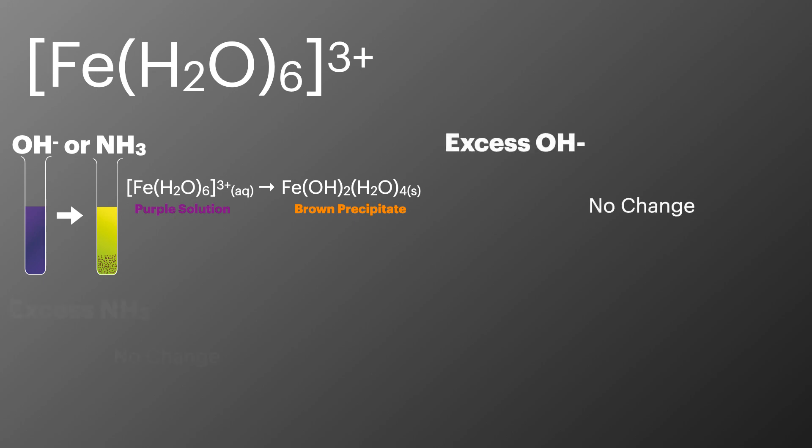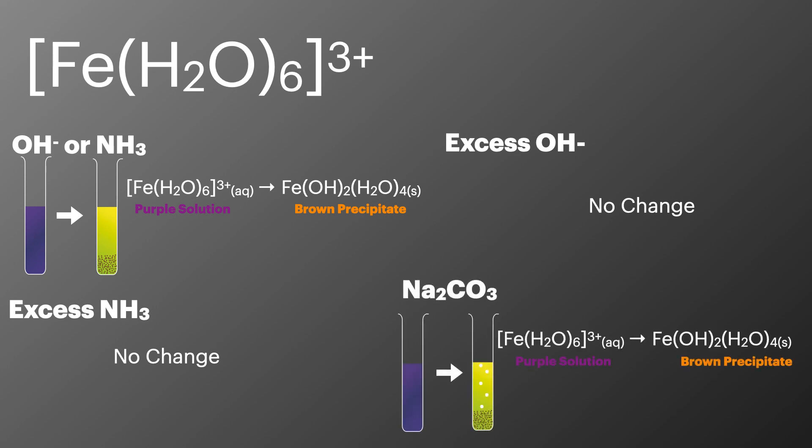With an excess of sodium hydroxide and ammonia there's no actual change and when we react it with sodium carbonate it's again that stronger acid so we form a brown precipitate along with bubbles of carbon dioxide.